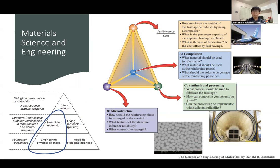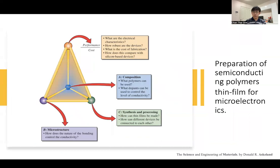Here we will have a study case about material science engineering. Let's say we are going to propose semiconductor polymer thin films for microelectronics devices. Our goal is fabricating semiconductor polymer thin films. To make these polymer thin films, first we need to pick one type of polymer material. Then we determine what kind of dopants we need to use for these conductive polymer thin films. And then, what is the microstructure — what is the arrangement of this polymer?